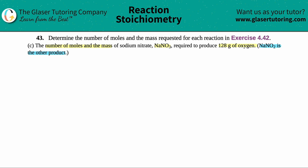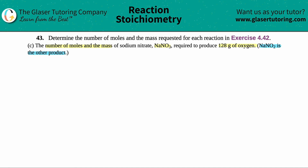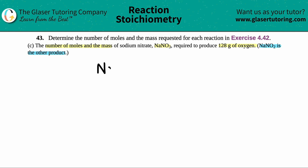We want to find the number of moles and the mass of NaNO3 required to produce oxygen. Since this compound is producing oxygen, sodium nitrate NaNO3 is a reactant, and we are producing oxygen. Remember, oxygen is not just O — it's a diatomic molecule when it exists by itself, so it has to be O2. The other product is NaNO2.